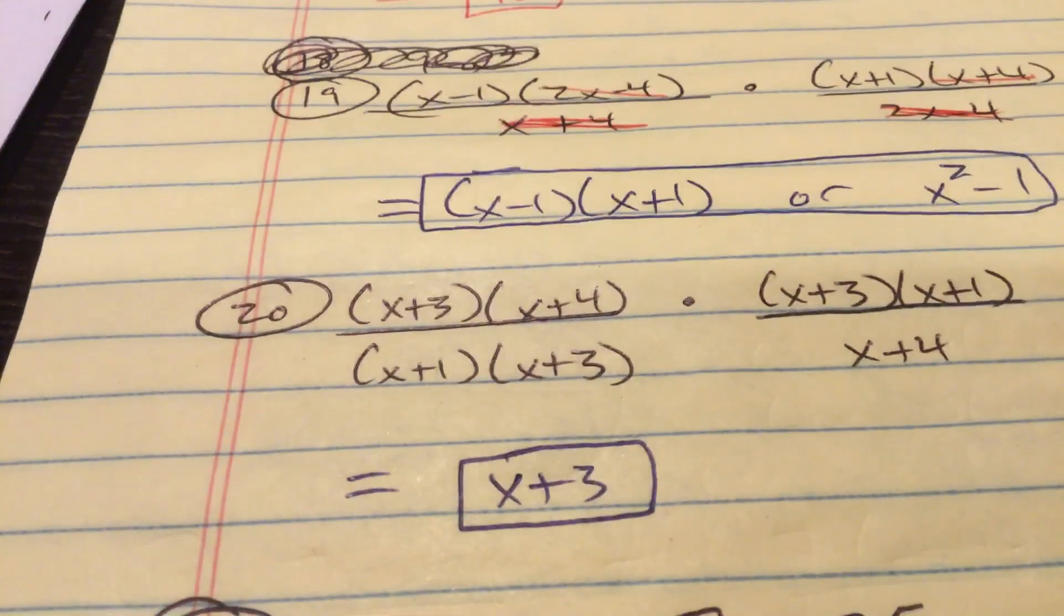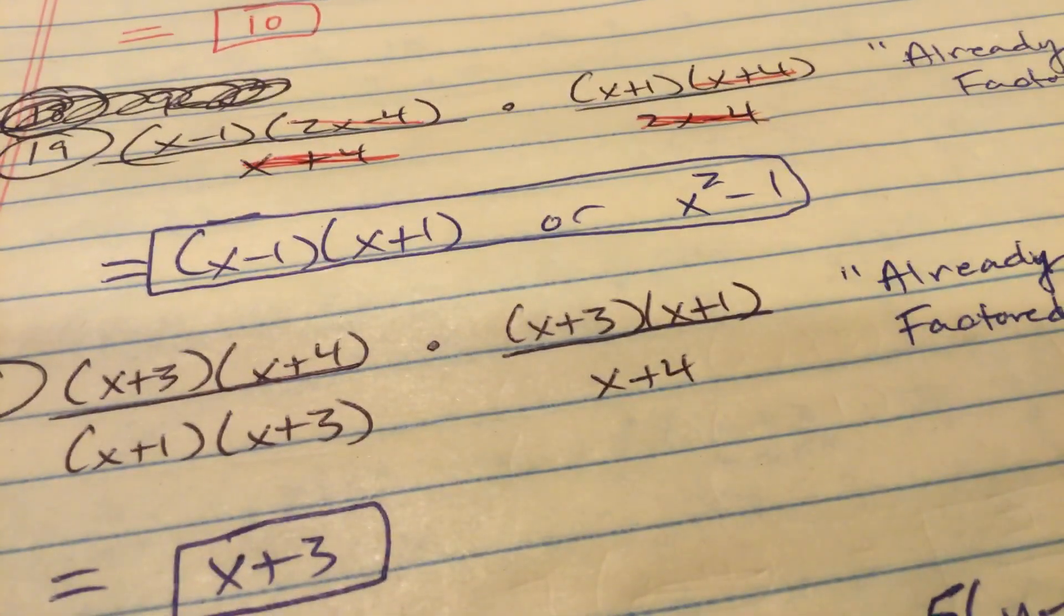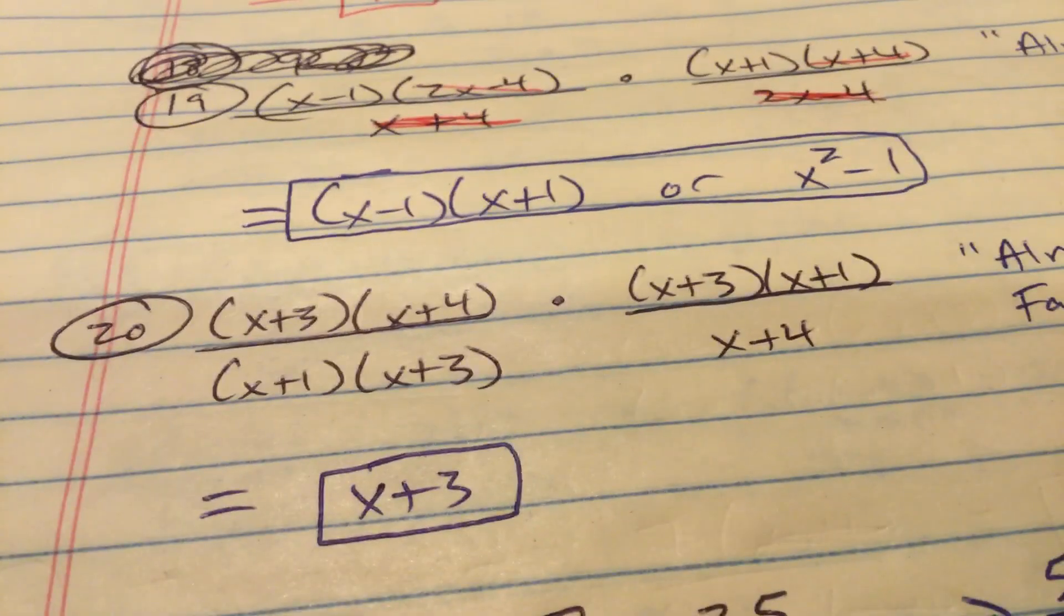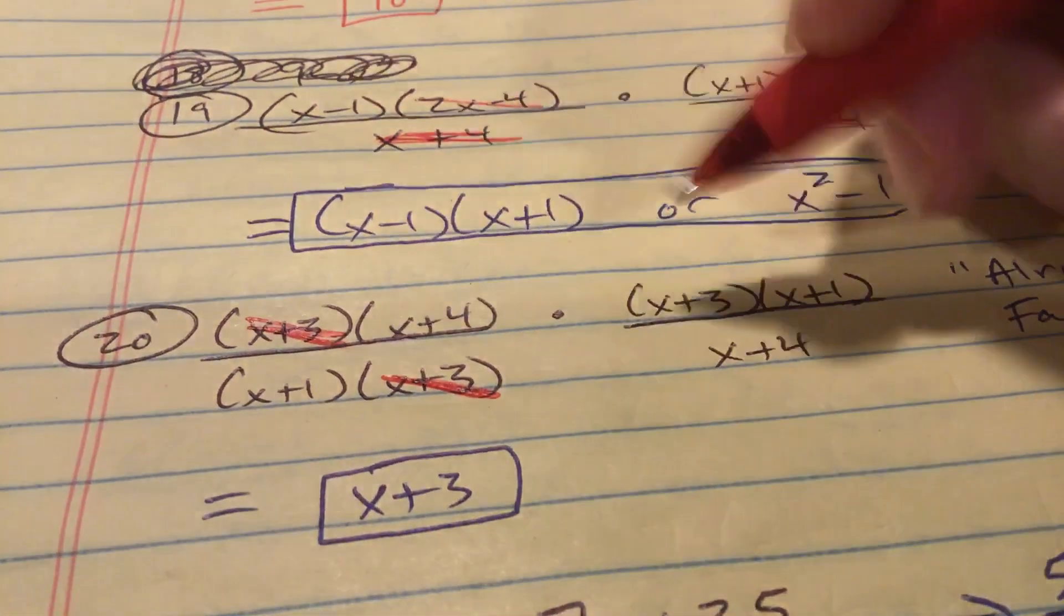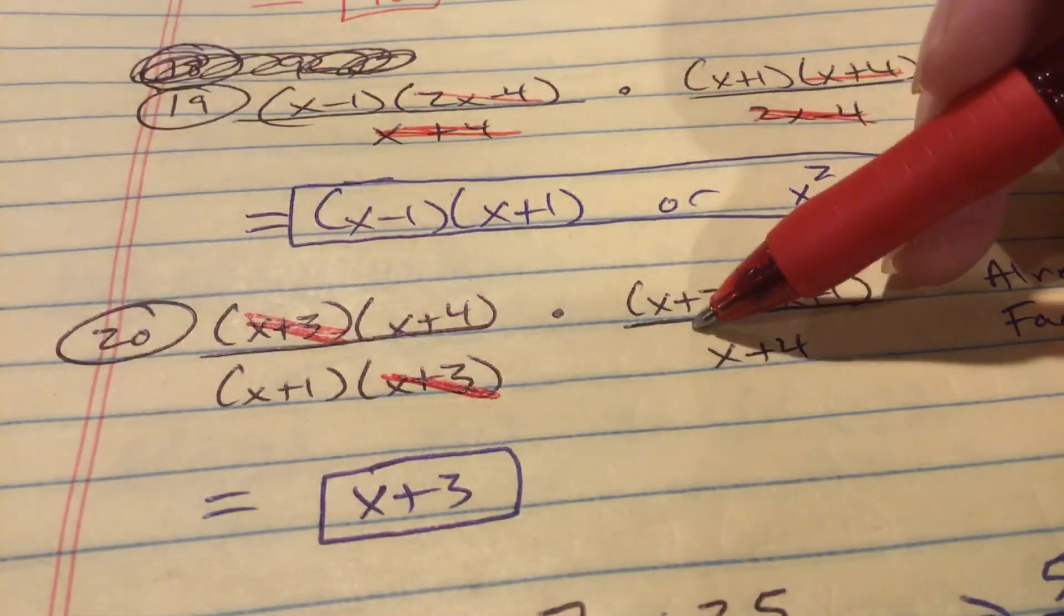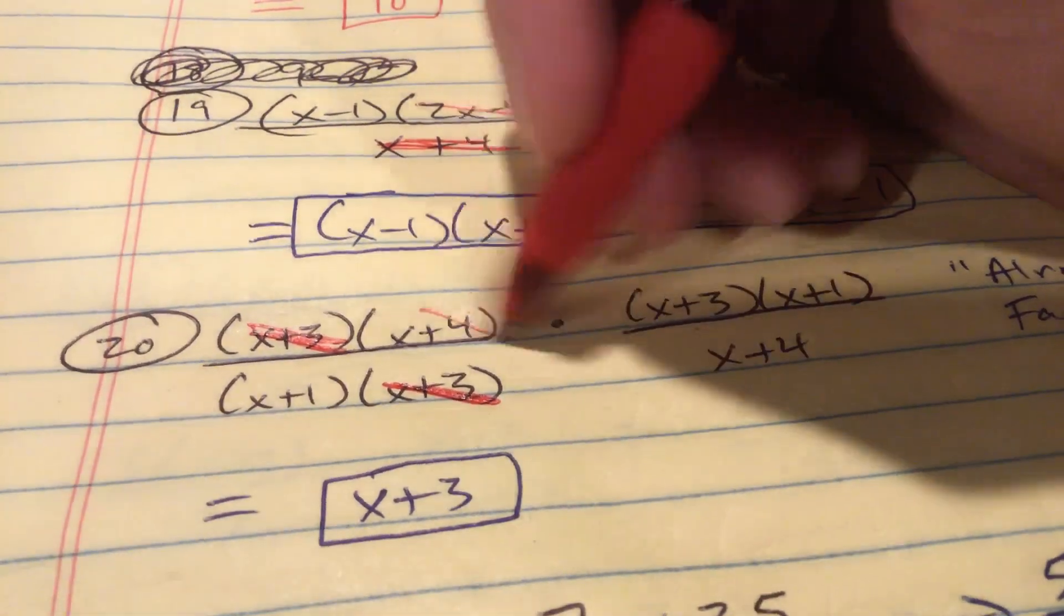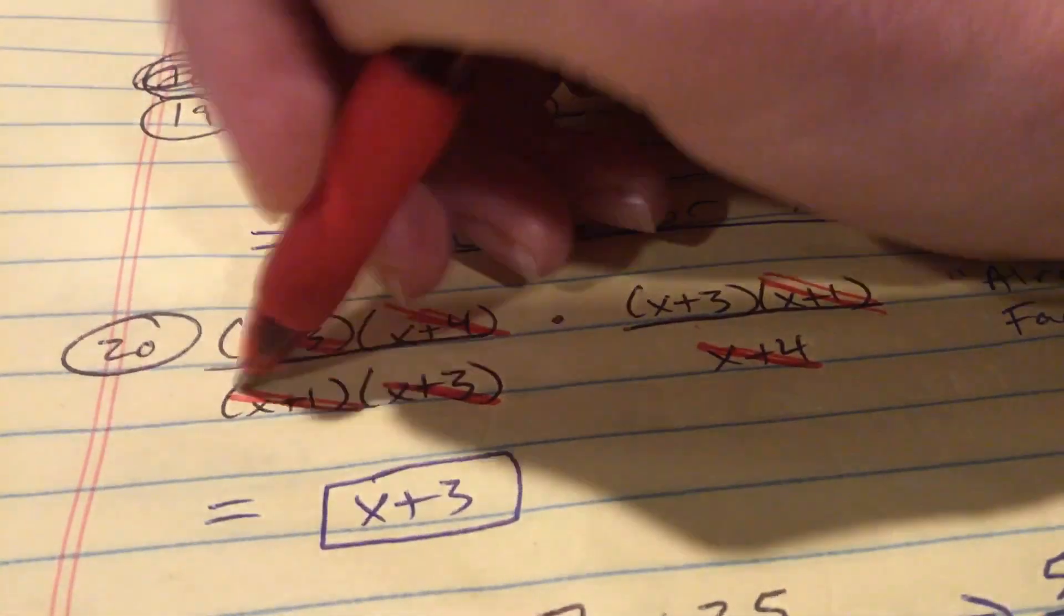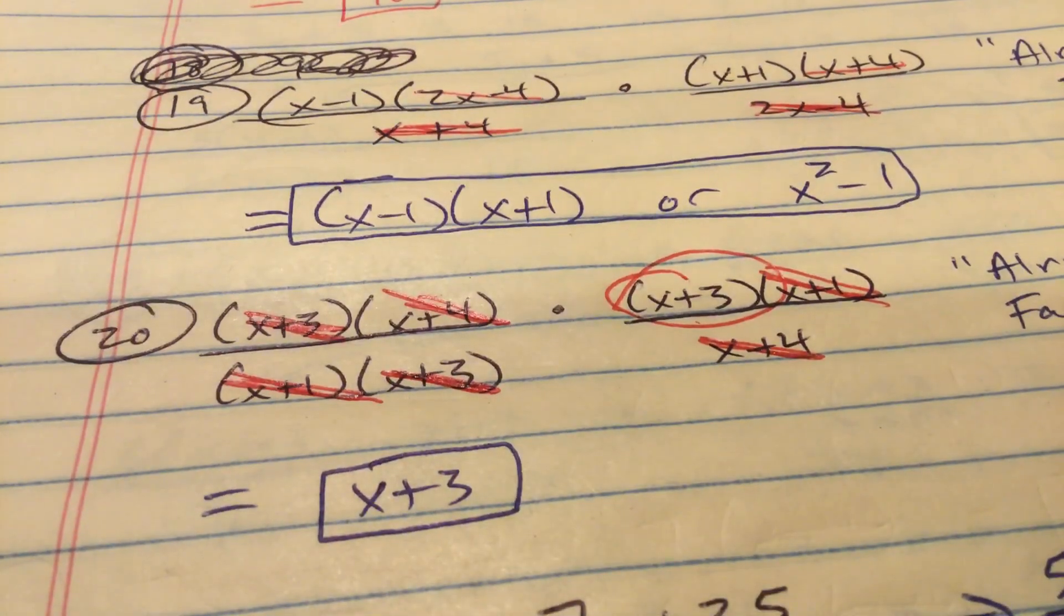20. Everything is already factored as well. There's the first fraction times second fraction. Again, everything's already factored. What do we got here? We got an x plus 3 over x plus 3. Now, notice that that x plus 3 does not cancel out, okay? They cancel each other out. That one remains, alright? Got an x plus 4 over x plus 4. x plus 1. x plus 1. Cancel. The thing that remains is that x plus 3. That is your answer.